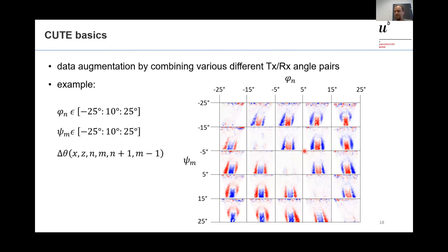We can augment our data by using many different transmit and receive angles — in this example, transmit angles ranging from -25 to +25 degrees in 10-degree steps, and receive angles in the same range. Starting from one angle, we change the transmit angle in a positive direction and simultaneously reduce the receive angle in the negative direction. For all these angle combinations, we produce a 2D map of echo phase shift, yielding a rich amount of data.